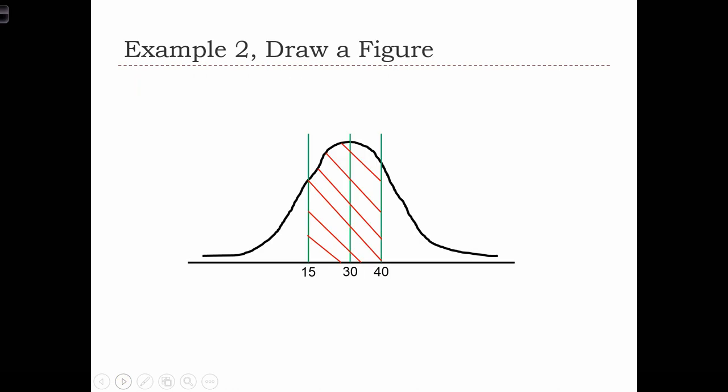The first step is to draw our distribution, a normal distribution centered around the mean of 30 minutes. We are looking for the probability between 15 minutes and 40 minutes, so 15 is to the left of the mean and 40 is to the right of the mean.